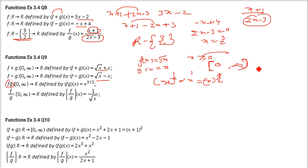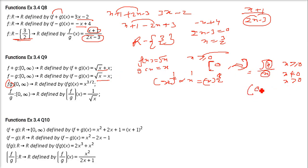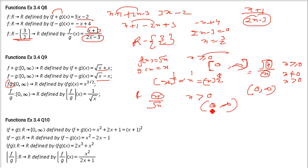For f/g = √x / x: x must be ≥ 0 for the root, but x cannot be 0 for the denominator. So x > 0, and the domain is (0, ∞). For g/f = x / √x: the root requires x ≥ 0 and x cannot be 0, so again x > 0. The 'not equal to 0' condition overrides the 'greater than or equal to 0', giving domain (0, ∞) for both.